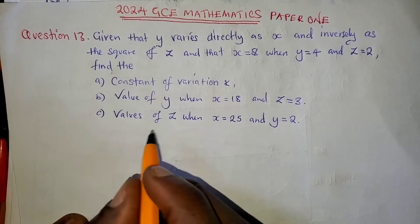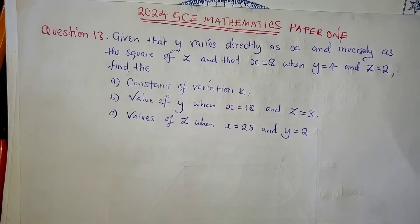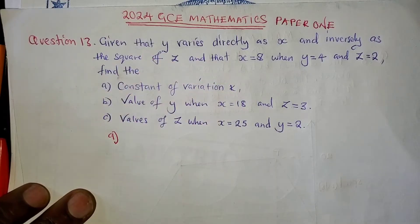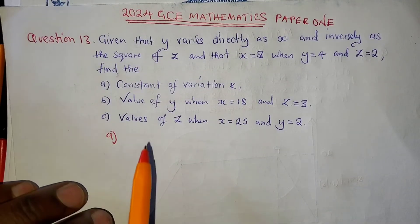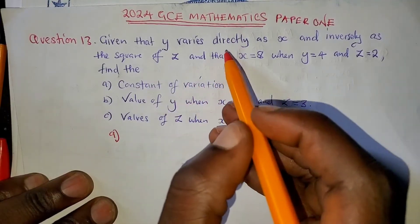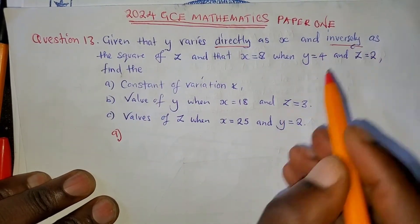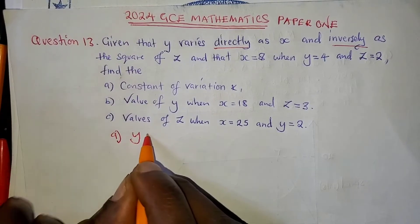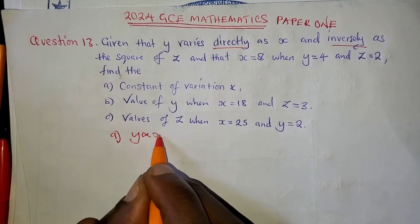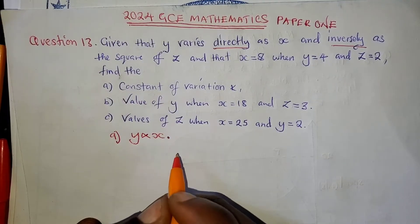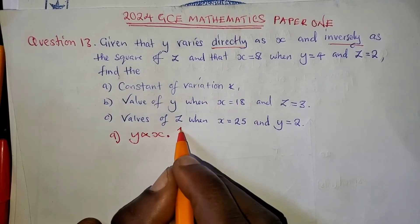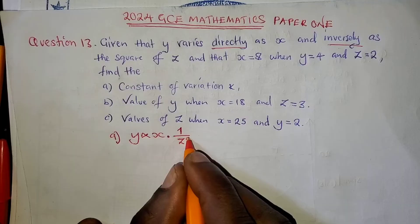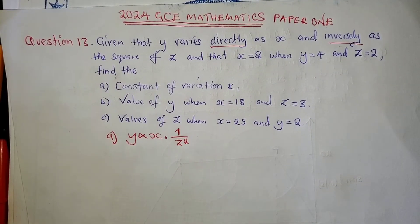The first thing we're going to do is interpret this statement into a variation symbol. It will be, since it is Y, this is the joint variation, it's a combination of direct and inverse variation. Now, it's saying Y varies directly as X, and inversely as 1 over the square of Z, meaning Z is squared, not square root, but as the square of Z.